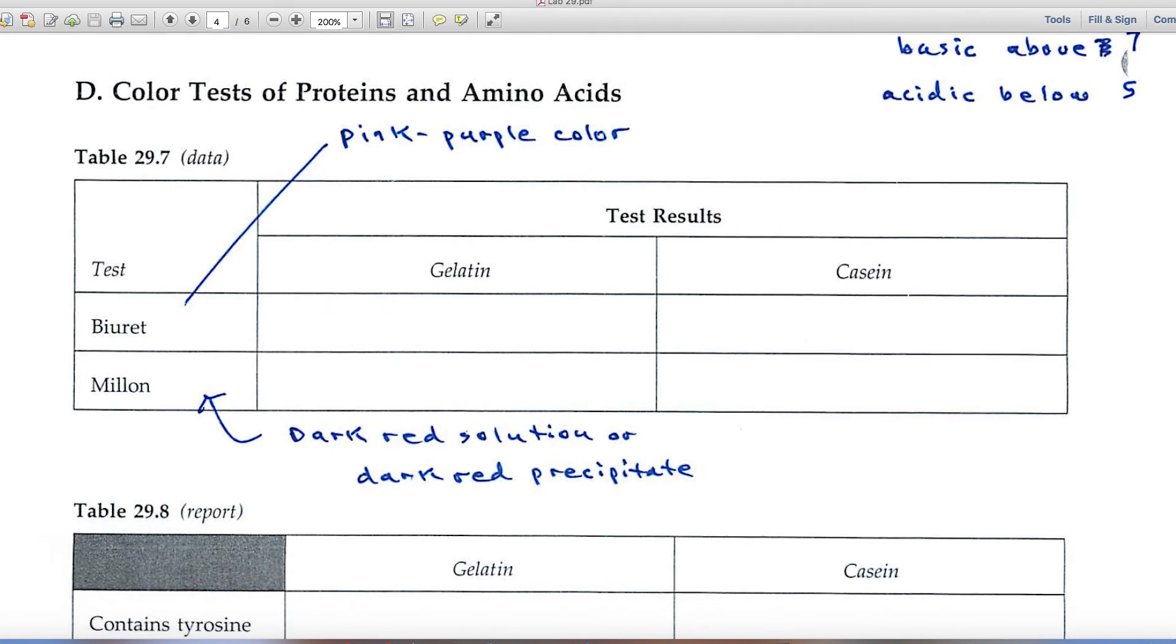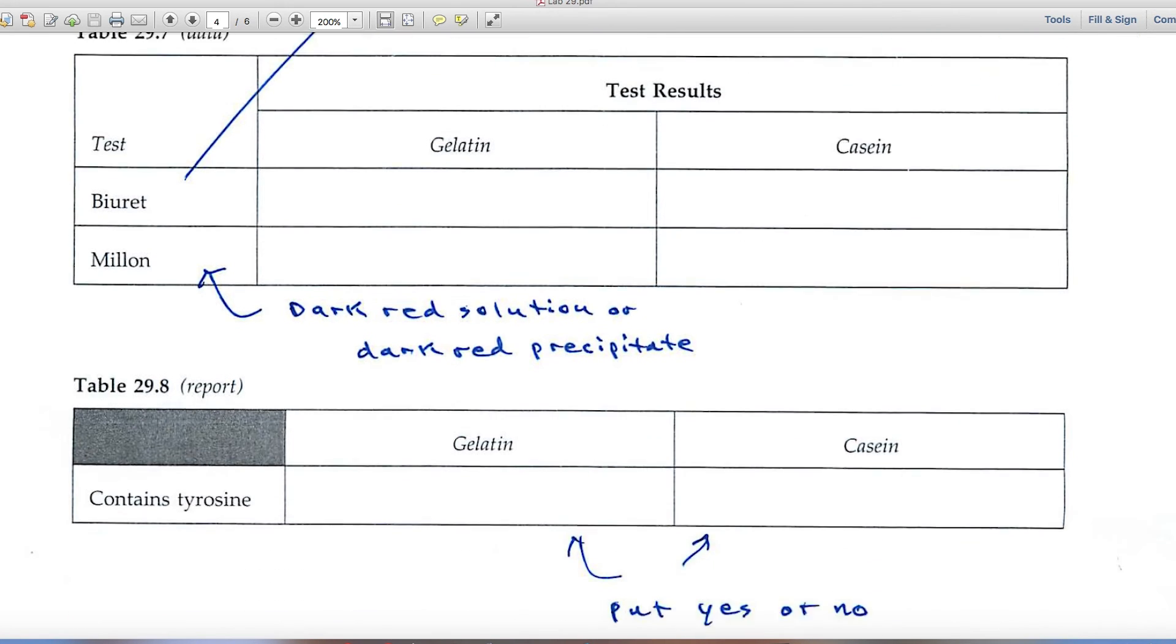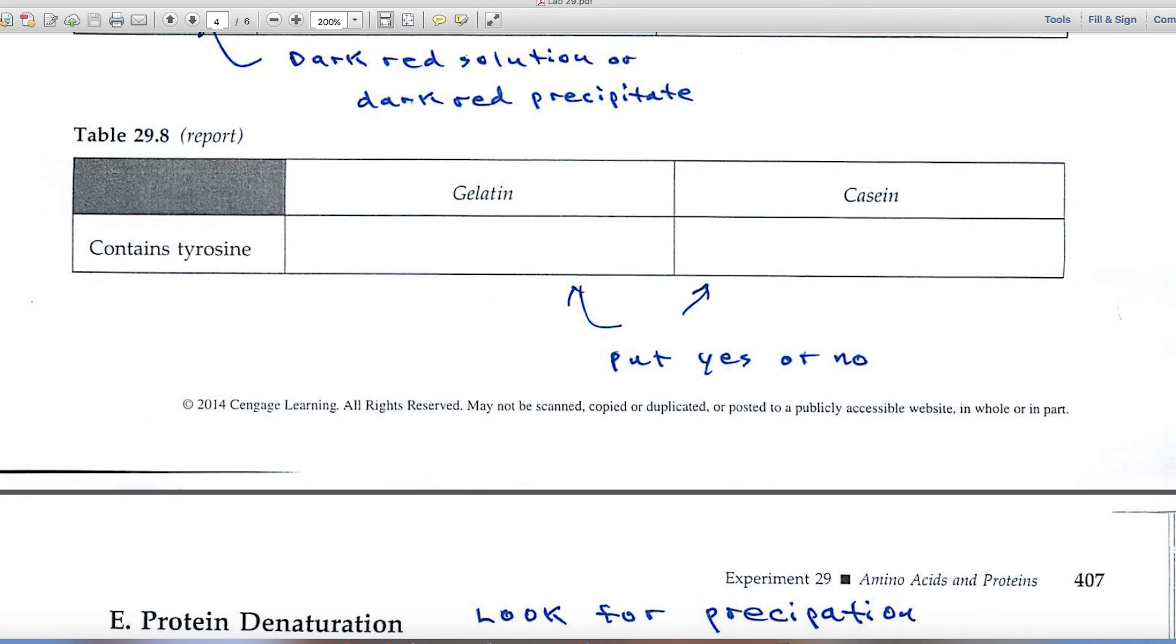Part D now deals with color tests of proteins and amino acids. Biuret is a general test for proteins and it gives a pink purple color. We said the Millon test, a dark red solution or a dark red precipitate. Those are the things that you'll look for in those photos.